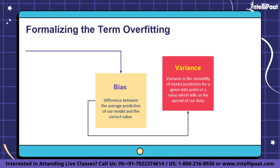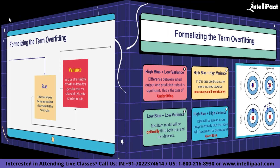There are a few more statistical terms that help formalize overfitting: bias and variance. Bias is the difference between the average prediction of our model and the correct value we are trying to predict. A model with high bias pays very little attention to training data, oversimplifies the model, and leads to high error on both training and test data. Variance is the variability of model prediction for a given data point, telling us the spread of our data.